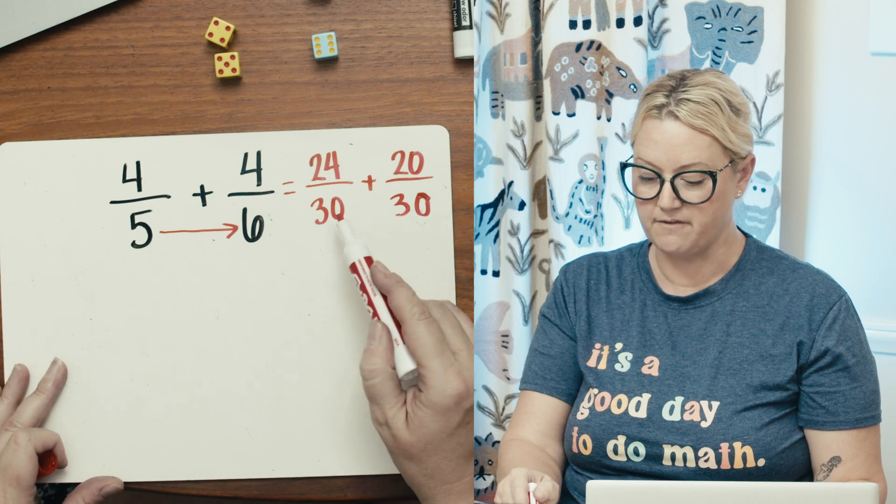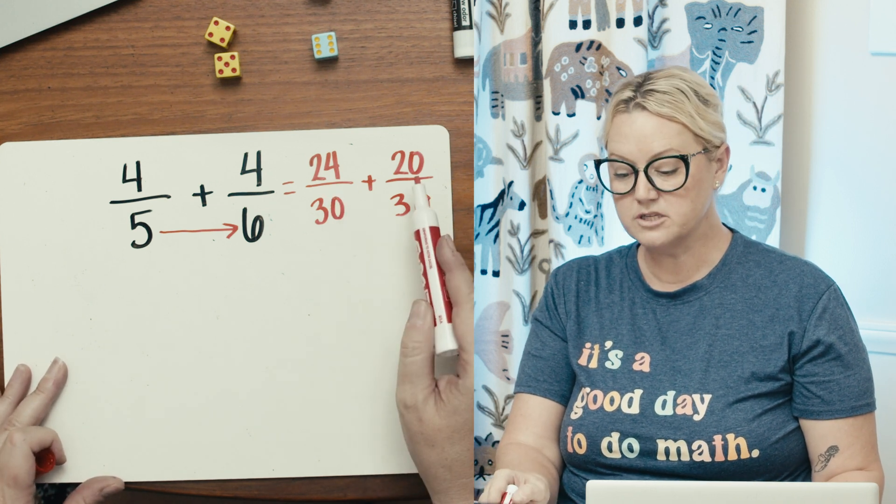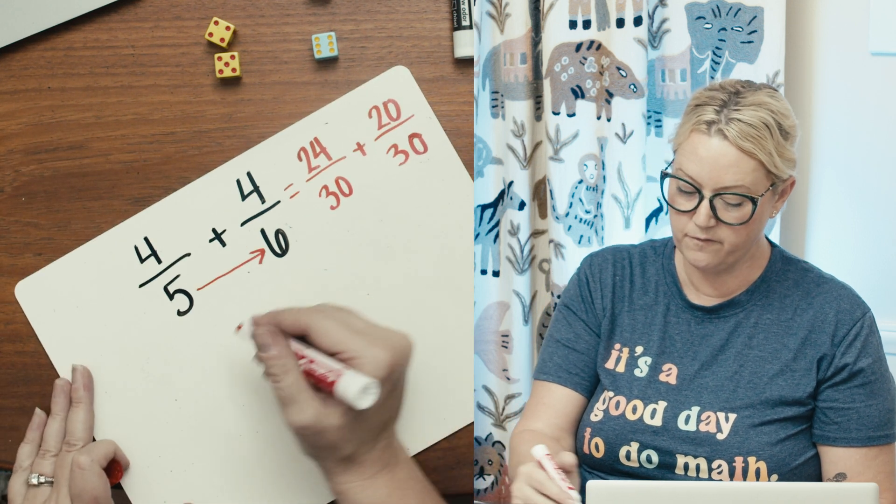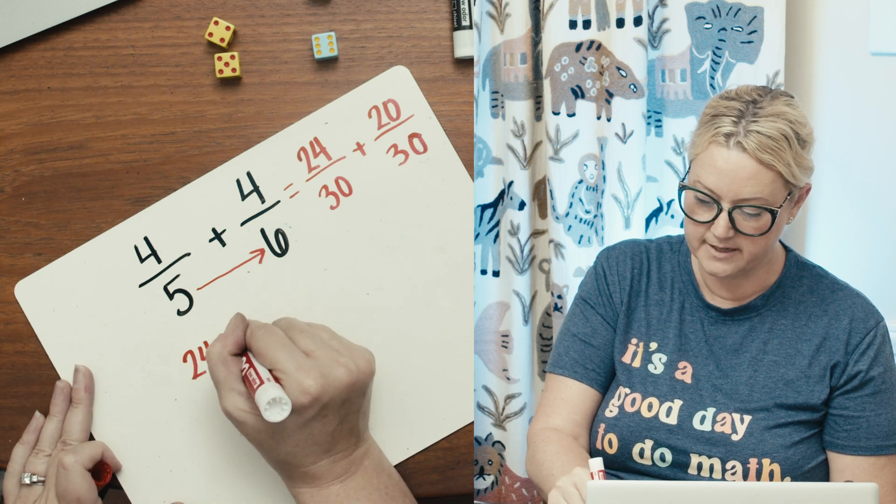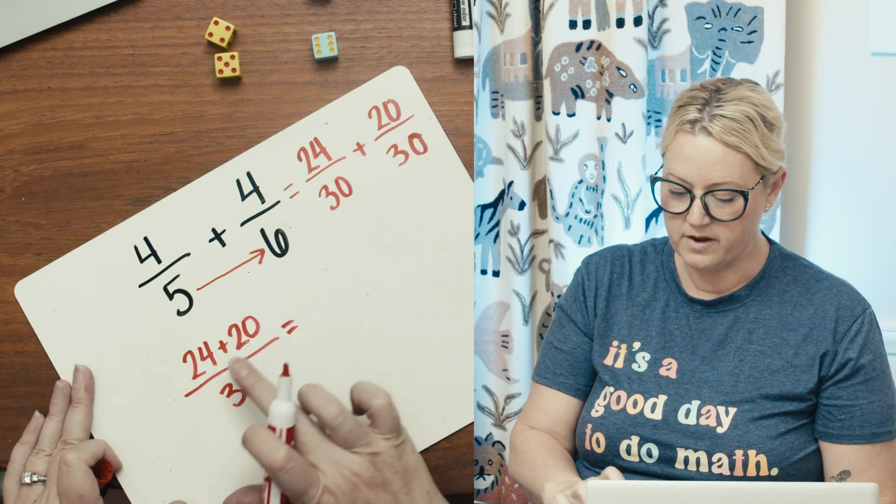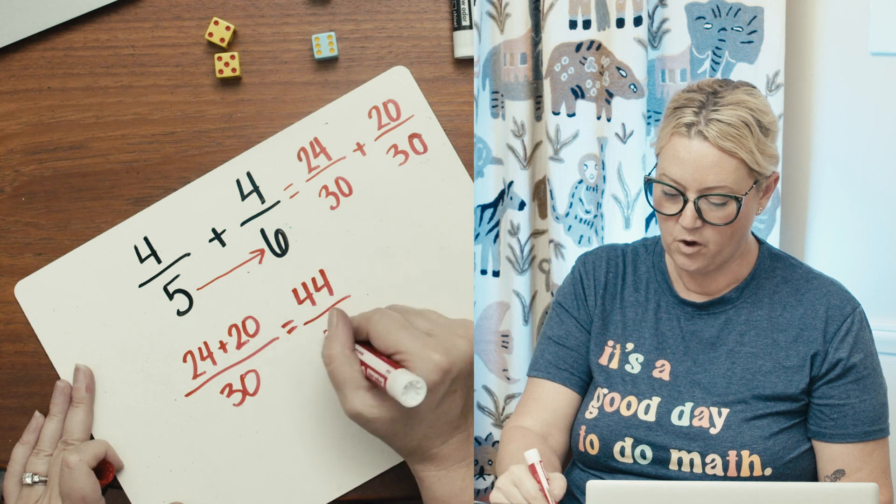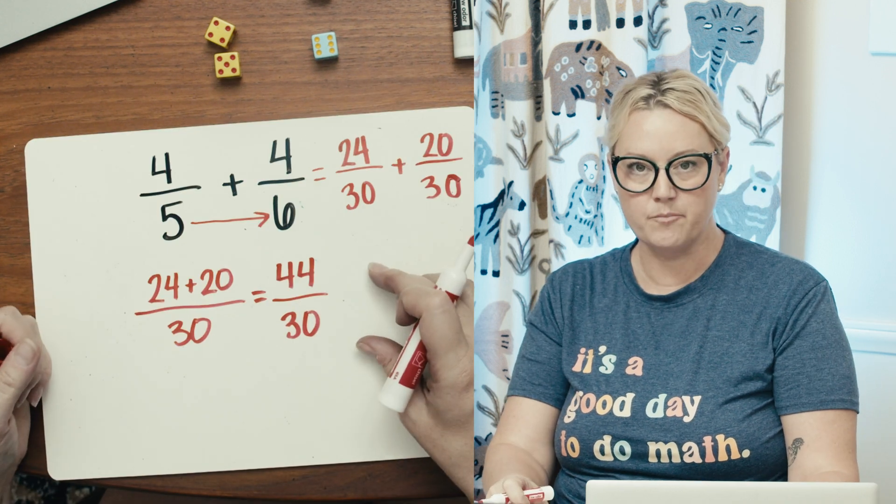All right, so now all I need to do is I've got 30 and 30. These are just going to add together. So I can even write this as 24 plus 20 over 30. 24 plus 20 is 44 over 30. Okay, so now we've got this improper fraction.